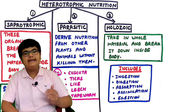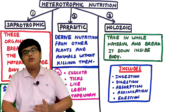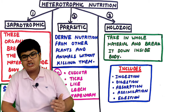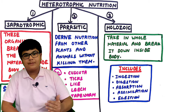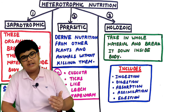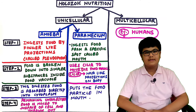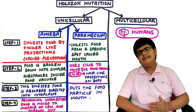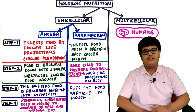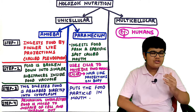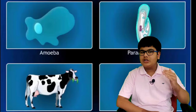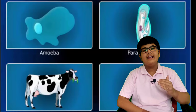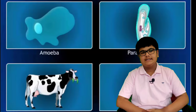Holozoic nutrition includes various steps: ingestion, digestion, absorption, assimilation, and ejection. Holozoic nutrition is carried out by both unicellular organisms as well as multicellular organisms.